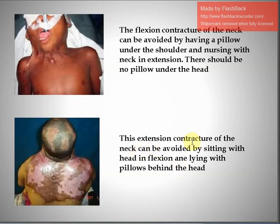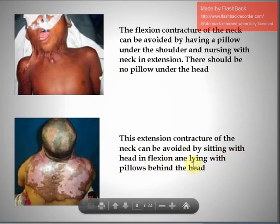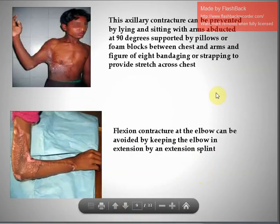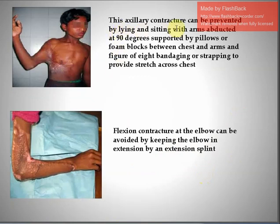Extension contracture of the neck can be avoided by sitting with the head in flexion and lying with pillows behind the head. Axillary contracture can be prevented by lying and sitting with arms abducted at 90 degrees, supported by pillows or foam blocks between the chest and the arms, and by figure-of-eight bandaging or strapping to provide stretch across the chest.